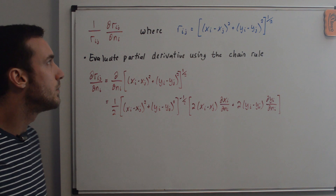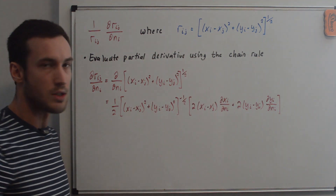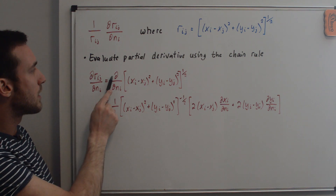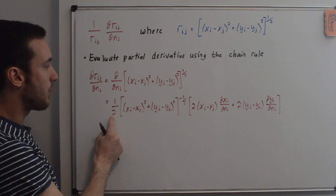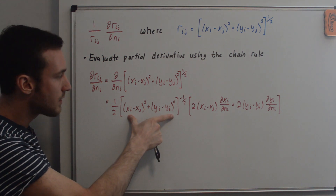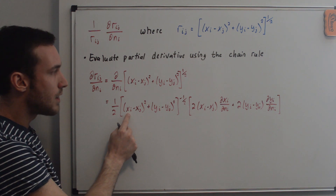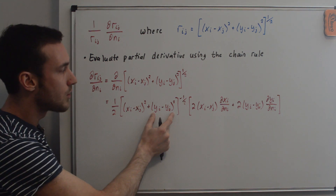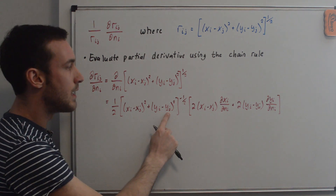We still need to evaluate this partial derivative. From the panel methods geometry video, r_ij is the distance between points (x_i, y_i) and (x_j, y_j). Taking the partial derivative of r_ij with respect to n_i using the chain rule: we bring down the 1/2 power and subtract 1 from the exponent, giving a negative 1/2 power. The derivative of the inside gives 2(x_i - x_j)(dx_i/dn_i) plus 2(y_i - y_j)(dy_i/dn_i). Note that dx_j/dn_i and dy_j/dn_i are zero because the subscripts don't match.